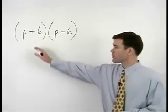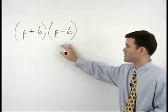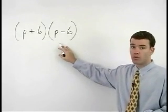To multiply P plus 6 times P minus 6, we will again be using the FOIL method.